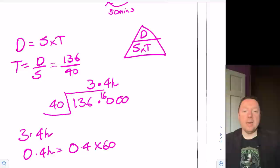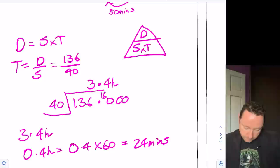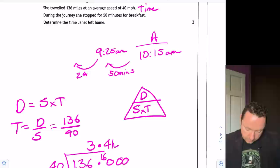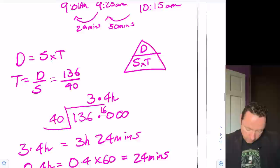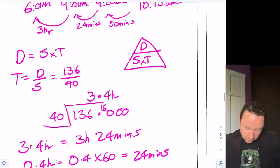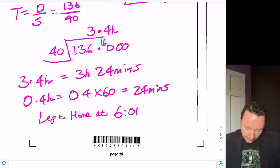So I'll go back up to my little diagram. I need to take away 24 minutes. So let's take away the 24 minutes. That leaves me with 9:01 AM. And then I need to take away the 3 hours. So just to answer the question, left home at 6:01 AM.